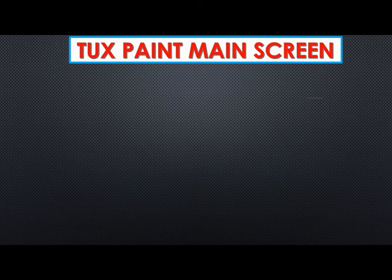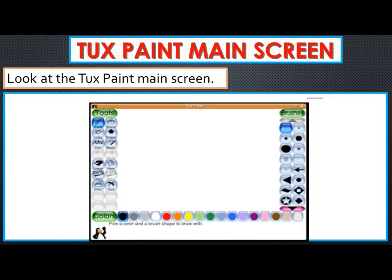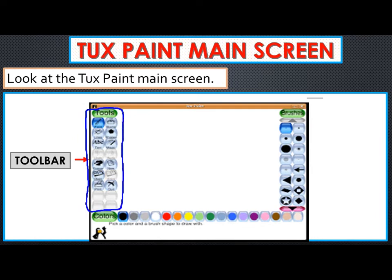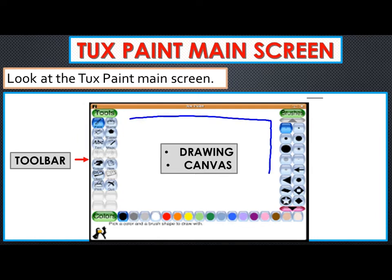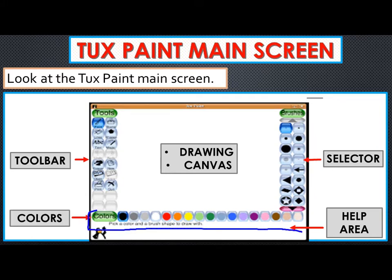Now let us look at the Tux Paint main screen. The Tux Paint main screen has the following parts: toolbar, drawing area, selector, color palette, and help area.